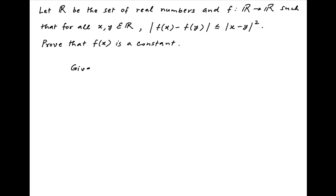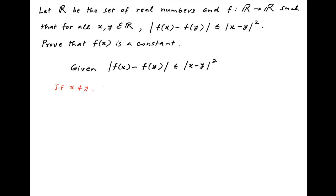We are given that the absolute value of f(x) minus f(y) is less than or equal to the absolute value of x minus y, whole squared. Now if x is not equal to y, then the absolute value of x minus y is not equal to 0.